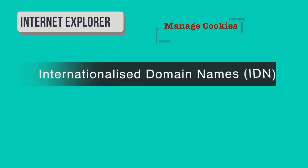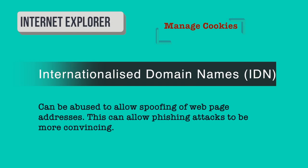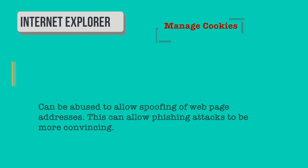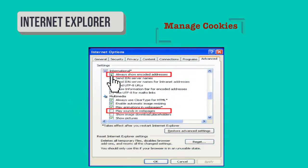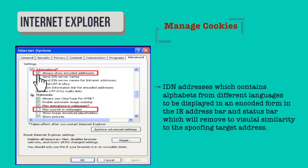Internationalized domain names can be abused to allow spoofing of a webpage address, making phishing attacks more convincing. This is known as a homograph attack, which uses internationalized domain names to trick people into believing they are on a legitimate website. To protect against IDN spoofing in Internet Explorer, enable the 'Always show encoded address' option. This will cause IDN addresses containing alphabets from different languages to be displayed in encoded form in the Internet Explorer address bar and status bar, removing the visual similarity to the spoofing target address.